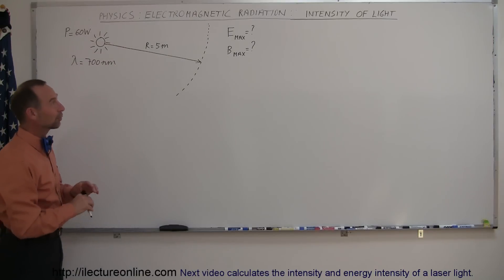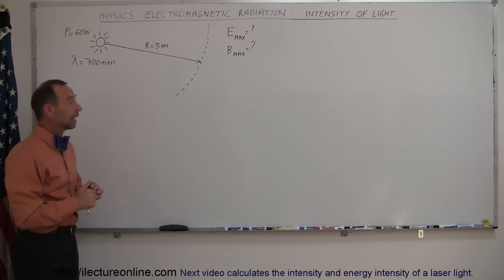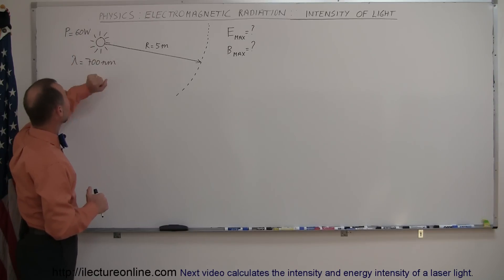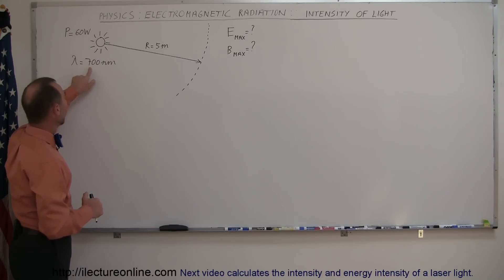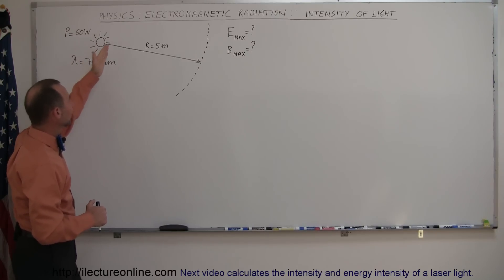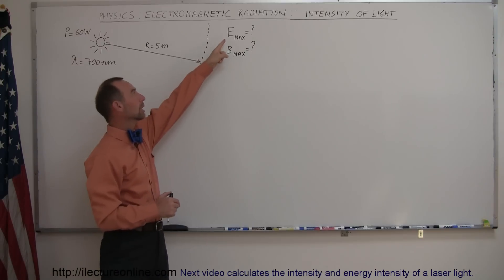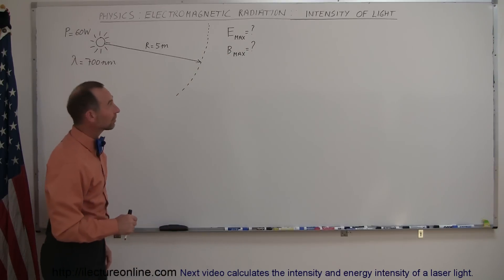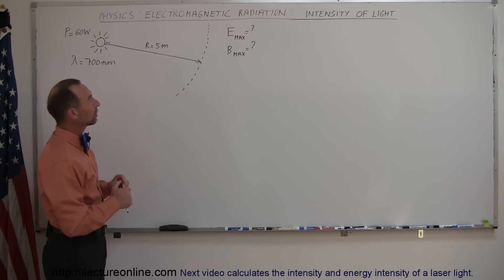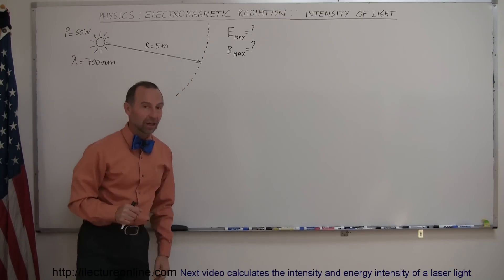Here's an example of how to work with the intensity of light, dealing with electromagnetic radiation. Imagine that we have a source of light. The power of the source is 60 watts, and the wavelength of the light emanated is 700 nanometers. At a distance of 5 meters, we want to know the amplitude of the electric field oscillations and the magnitude of the magnetic field oscillations.